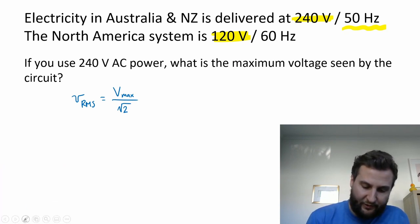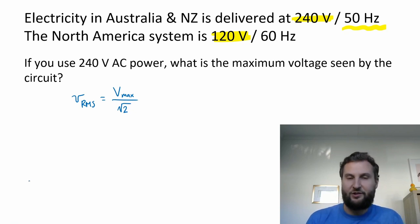So if you use 240 volt AC power, what is the maximum voltage seen by the circuit? So the circuit is fed voltage from the mains, and that voltage is going to drive the current through the circuit. In an AC system, it's alternating. So it's going to alternate between the peak and the zero and then the negative peak, and it's going to do this 50 times a second in Australia and New Zealand. Hertz means cycles per second. So 50 times every second, we'll have a peak and then back down and back up through the zero.